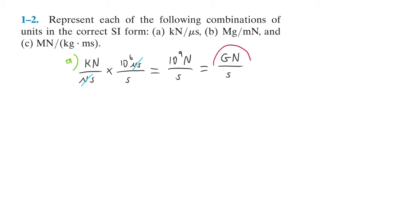For part B, we have megagrams over millinewtons. Again, we want to convert that to newtons. So for every newton there are 10 to the third millinewtons; those cancel, and that leaves us with a megagram, which is 10 to the 6, times 10 to the third, which is 10 to the 9 grams per newton.